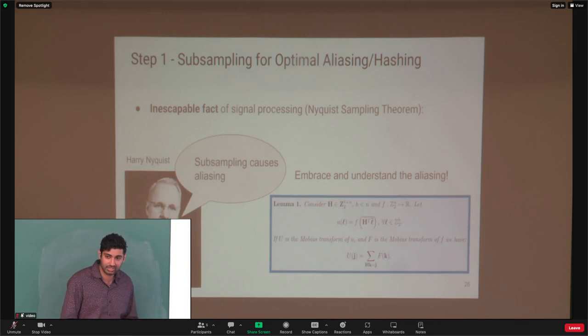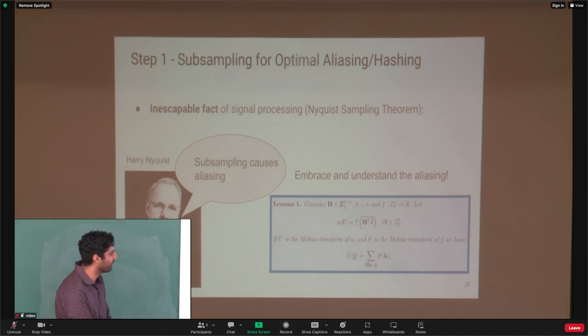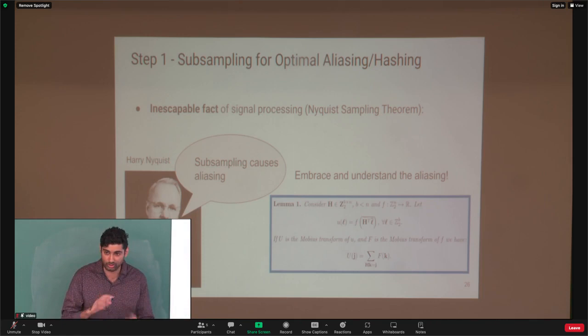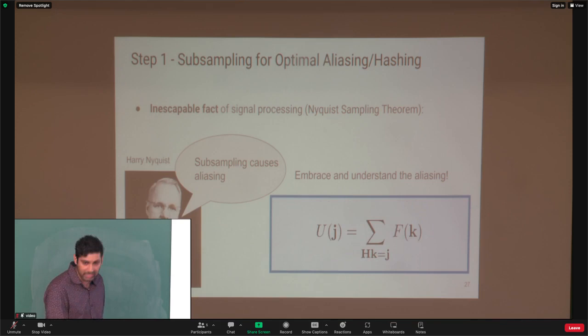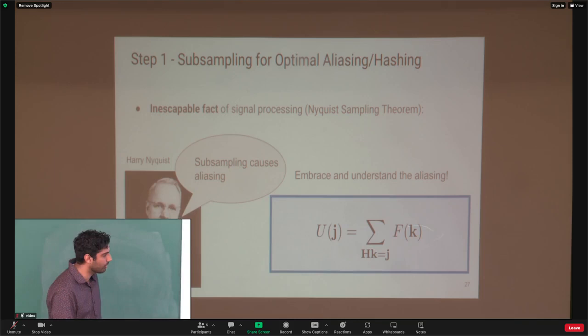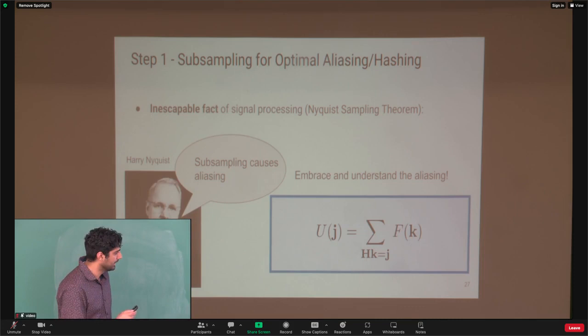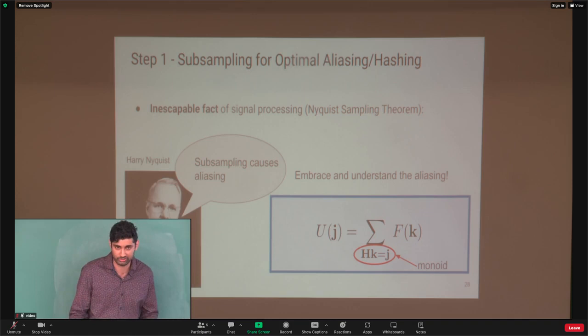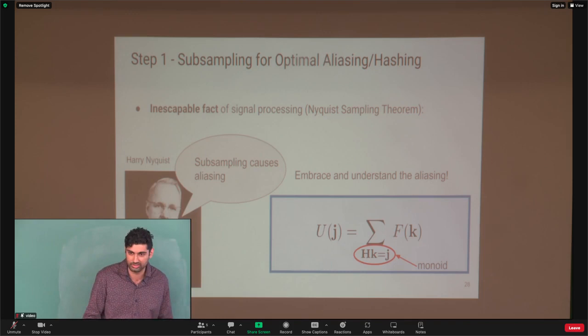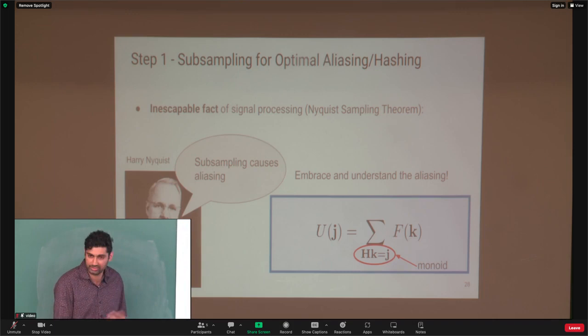We construct a matrix H and choose our masks according to that matrix. The result is an understandable aliasing pattern: we're hashing all of the coefficients together according to matrix H. This arithmetic is monoid arithmetic — instead of F2 where you have XOR addition, this is OR. This is exactly what we see with group testing. For the Hadamard transform, it's F2, which is where error correcting codes and parity check matrices come in as good hash functions.